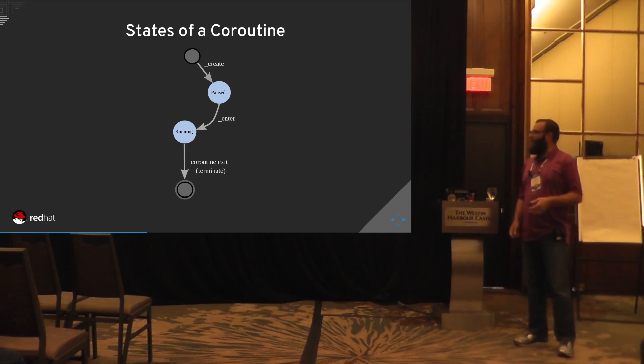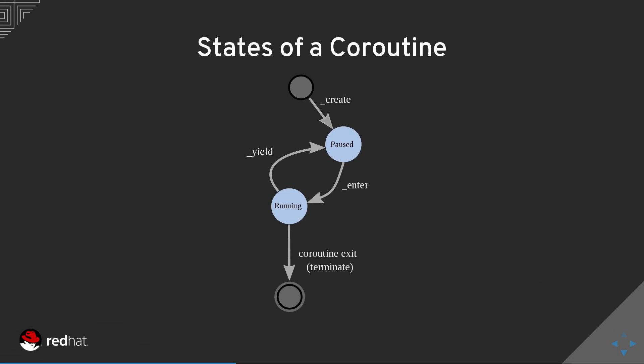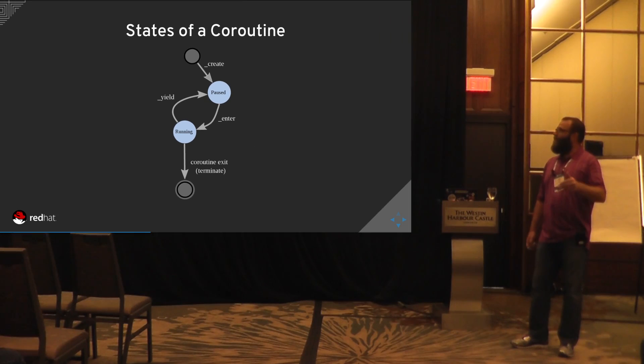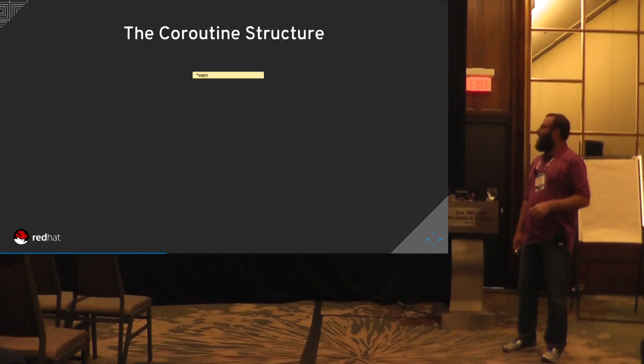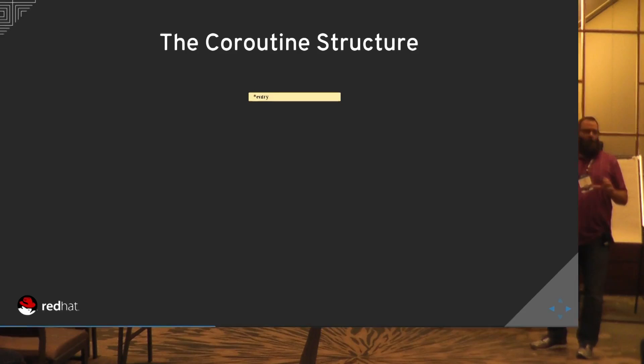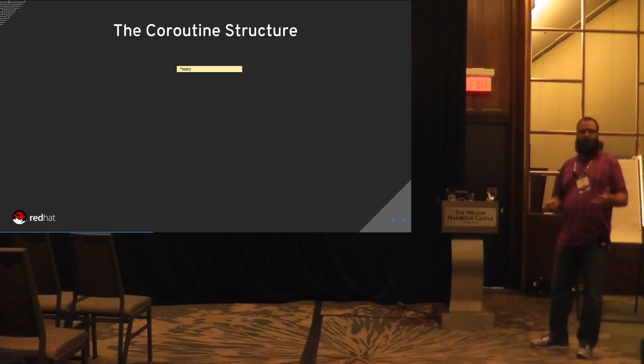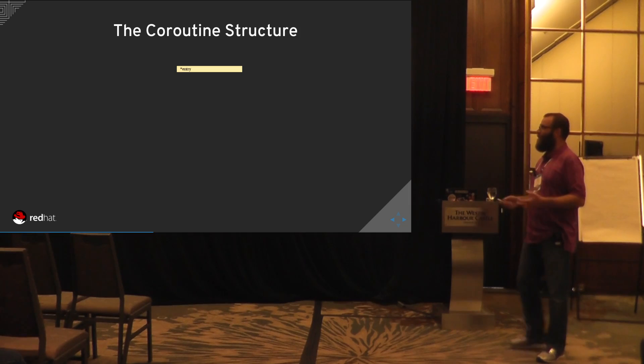More interesting is if we actually do a yield inside the coroutine. A yield is how we pause the coroutine — once you perform a yield, we return control back to whoever entered that coroutine. It's useful to think about what a coroutine actually is: since it's not a thread that's really running, it's just a function call, but we do have a little bit of structure around it.